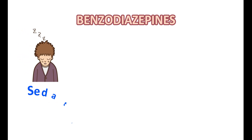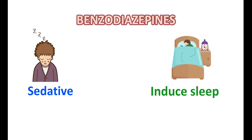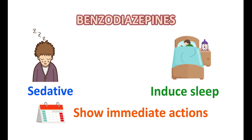Benzodiazepines have many advantages in controlling anxiety. They are sedative in nature and can reduce aggressiveness associated with anxiety symptoms — that's why they are also called minor tranquilizers. They can also induce sleep, which is beneficial since anxiety is commonly associated with insomnia. A third advantage is that benzodiazepines show immediate action and can reduce anxiety symptoms within the same day.